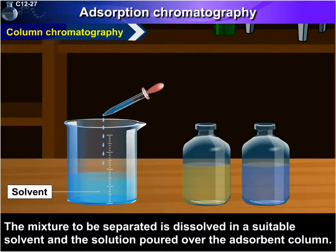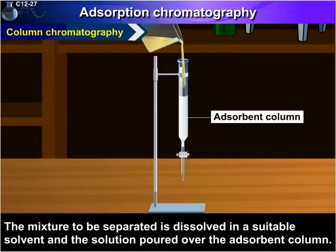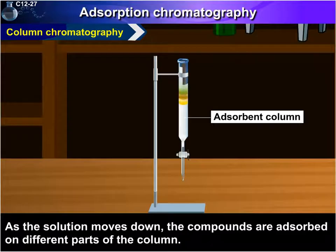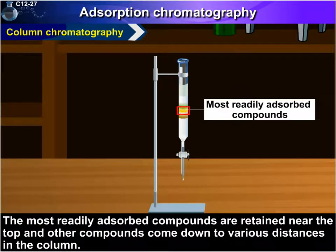The mixture to be separated is dissolved in a suitable solvent, and the solution is poured over the adsorbent column. As the solution moves down, the compounds are adsorbed on different parts of the column. The most readily adsorbed compounds are retained near the top, and other compounds come down to various distances in the column.